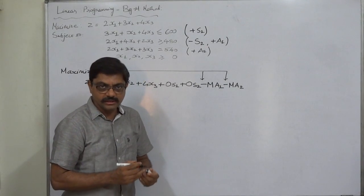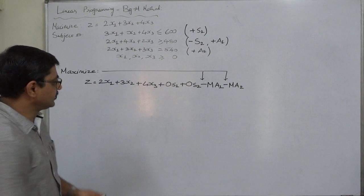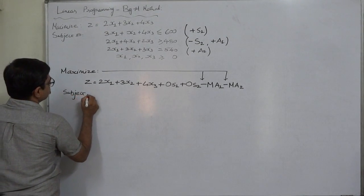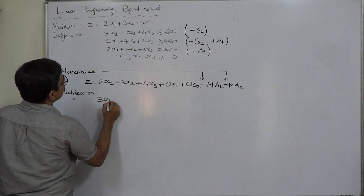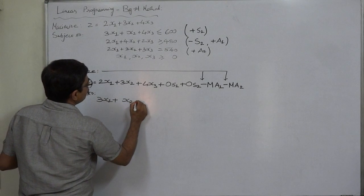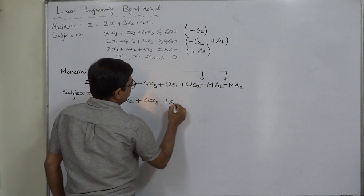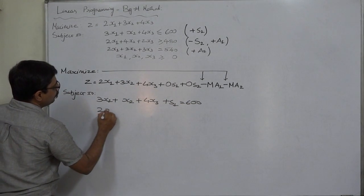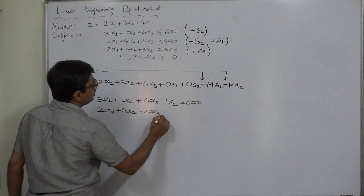Subject to the constraints: the first is 3x1 plus x2 plus 4x3 plus S1 equals 600. The second will be 2x1 plus 4x2 plus 2x3 minus S2 plus A1 equals 480.